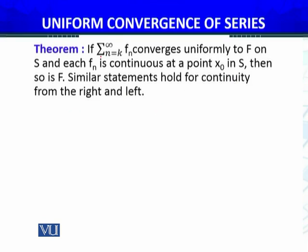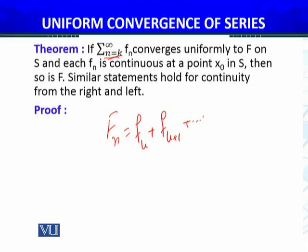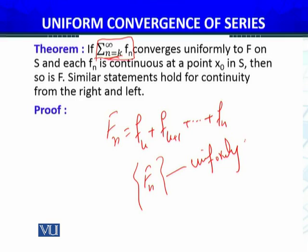Similar statements hold for continuity from the right and left side. In a way, we shall find the sequence of partial sums S_n(x) = f_k + f_(k+1) + ... + f_n. If this series uniformly converges, then the sequence of partial sums uniformly converges.